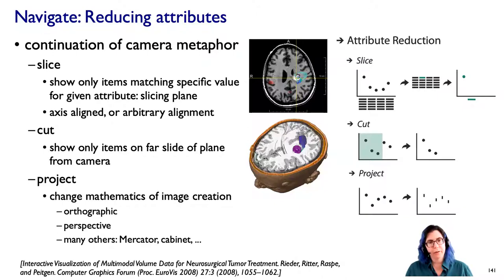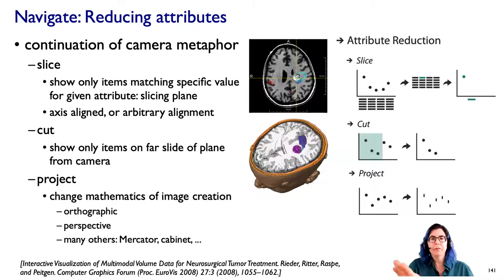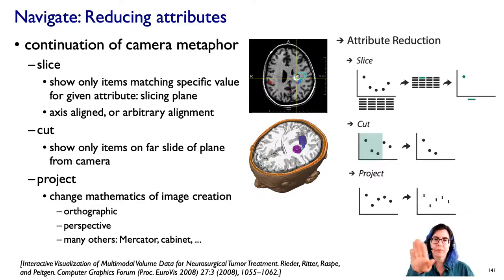Navigation can also be thought of as reducing the attributes you're showing, not just the items. Continuing with the camera metaphor, here it often makes more sense to think about attributes as dimensions. Especially if you're dealing with spatial data — for example data generated by a medical imaging process — you can think of just seeing a two-dimensional slice of a three-dimensional image. This can be aligned on the same axis used to originally sample the data, or it could be an arbitrary alignment, in which case you'll need to grapple with interpolation and the issues that come up with handling continuous data in a mathematically reasonable framework.